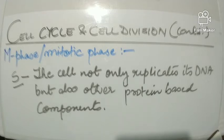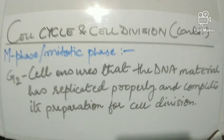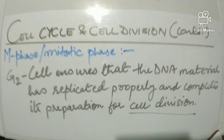After the cell has replicated its protein-based components, it enters into the next phase — the G2 phase. During G2 phase, the cell ensures that the DNA material has replicated properly and its preparation has finished for cell division.